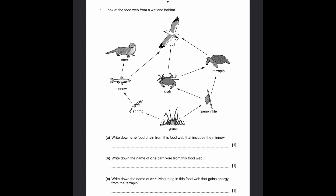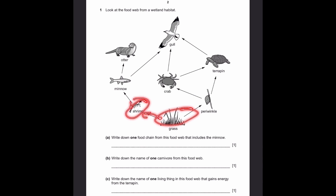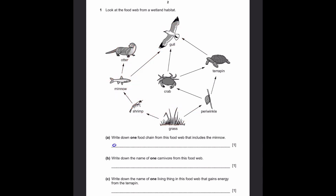Question 1. Look at the food web from a wetland habitat. Part A: write one food chain from this food web that includes the minnow. The minnow is over here, and we need one food chain including it, starting with the producer, which is the grass. To get to the minnow, we go to the shrimp and then to the minnow. I'll be writing: grass → shrimp → minnow → otter. You can replace otter with gull — both are correct answers.